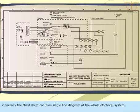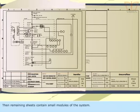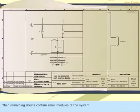Generally, the third sheet contains single line diagram of the whole electrical system. Then remaining sheets contain small modules of the system.